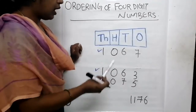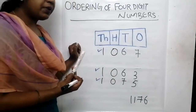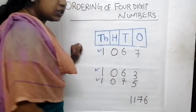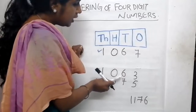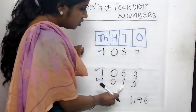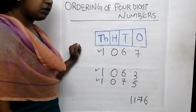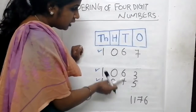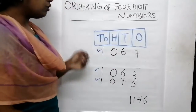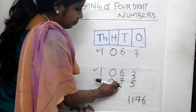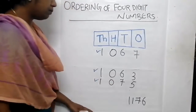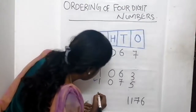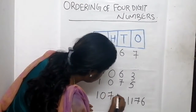We know in the hundreds place these numbers have the same value, so we have to move to the next place - tens place. What are the numbers in tens place? Here it is 6, here it is again 6, and here it is 7. Which number is smaller and which is largest? We know 7 is larger than 6, so 1,075 will be greater than these 2 numbers. We remove 1,075 and write it here.